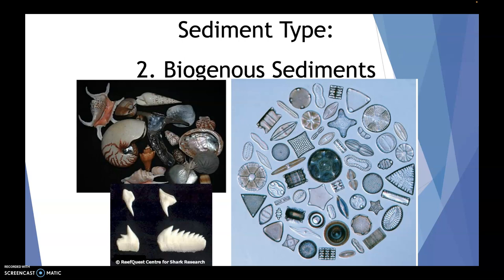Another thing to consider when we think of biogenous sediments is that poop is going to be involved as well. Lots of whale poop — these big creatures take big poops — which will be broken down plankton. Some meat-eating creatures like killer whales or dolphins will have poop consisting of bits and pieces of the animals they've consumed. I know that sounds really gross, but it's just the reality of nature.